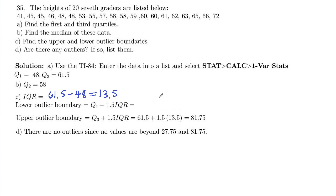And then part C, our upper and lower outlier boundary, so that's going to be Q1 minus 1.5 IQR and Q3 plus 1.5 IQR. So our Q1 was 48. We are going to subtract 1.5 times the 13.5.